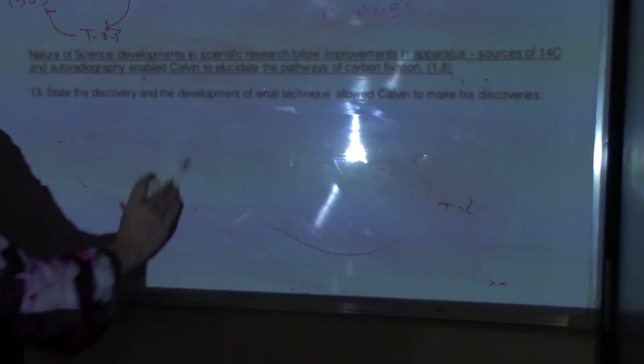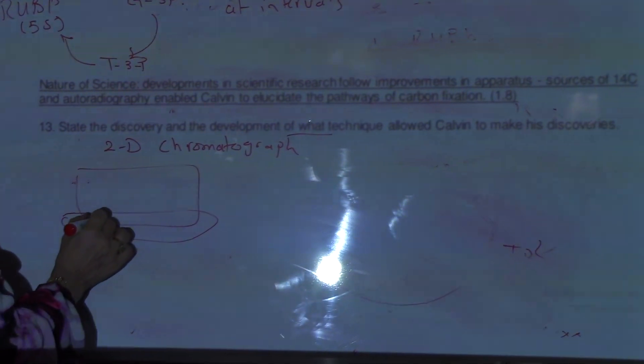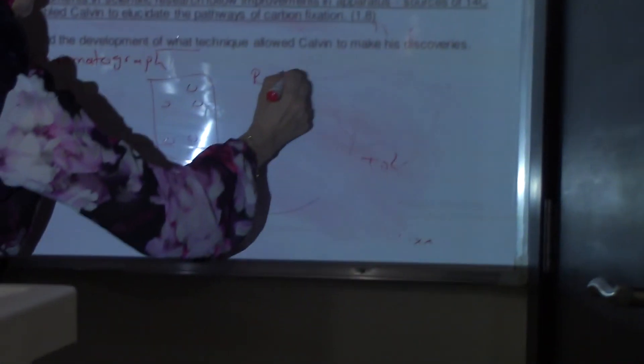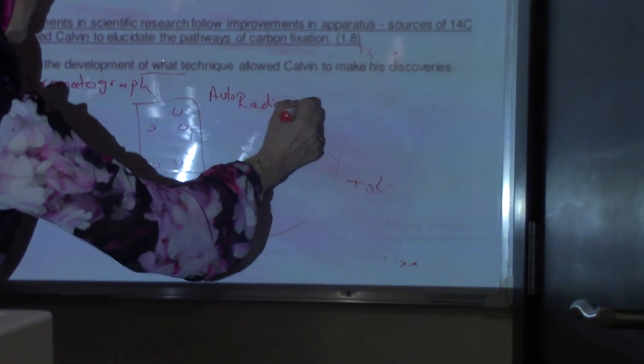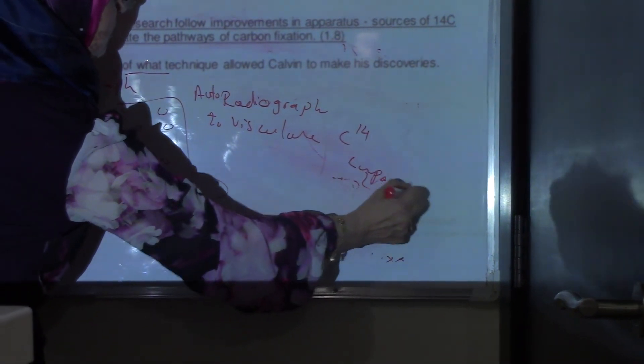State the techniques that allowed Calvin to make his discoveries. The technique used was 2D chromatography: he placed chromatography paper in solvent, ran the chromatography, then flipped the paper and ran chromatography again in the second direction, so the molecules spread out further. He then used autoradiography to visualize the carbon-14 compounds — the radioactive carbon.